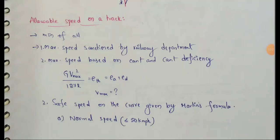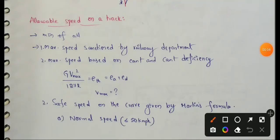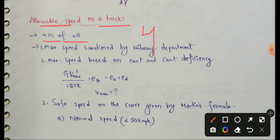Next topic: allowable speed and track. For what we call allowable speed, we have 4 types of theories. We will consider the allowable speed as the minimum of all four. We will discuss them one by one.